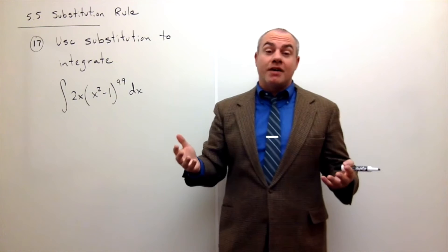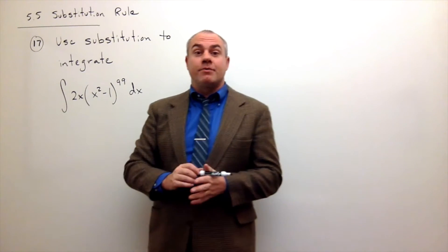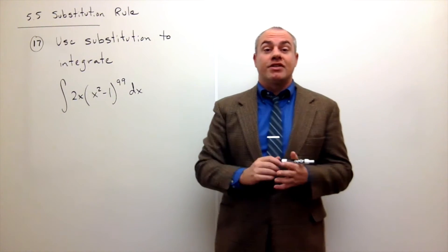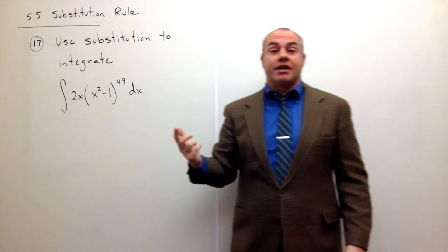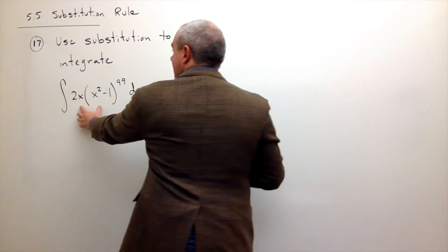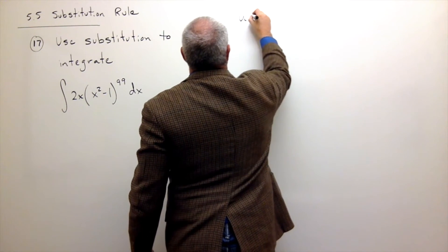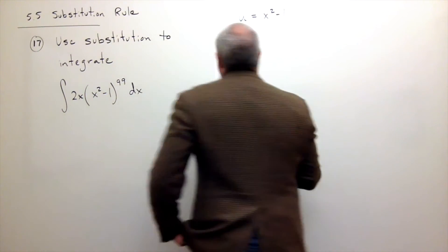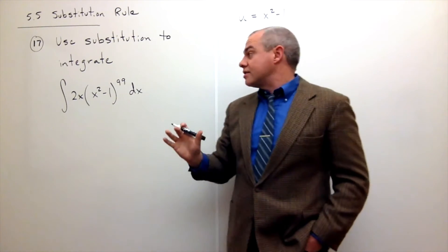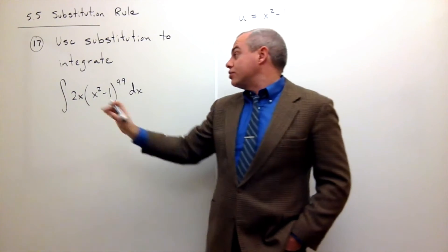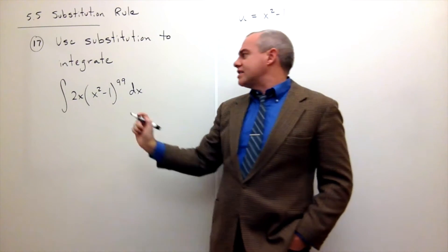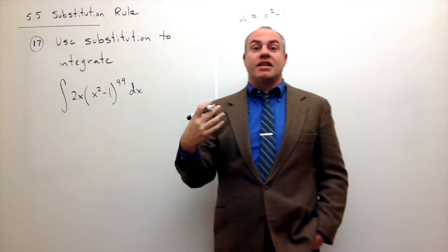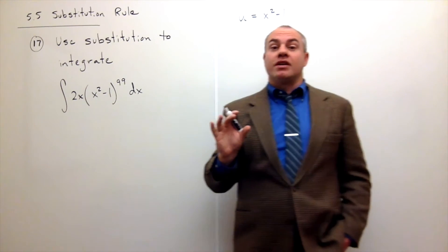When doing U-substitution, sometimes you make the right substitution and sometimes the wrong one — that's okay, just keep trying until you can rewrite the integral in a form where you can take an antiderivative. Here I'm going to let U equal x squared minus 1. I choose this for two reasons: first, its derivative is 2x, which appears in the integral; and second, it's a function inside another function, and those are typically the things we make a U-substitution for.